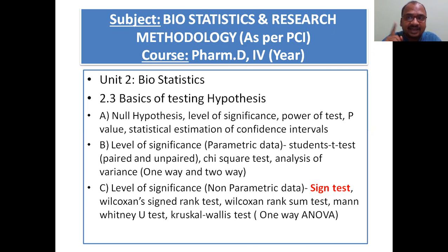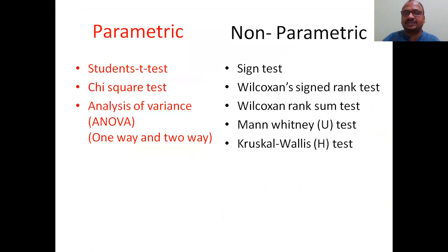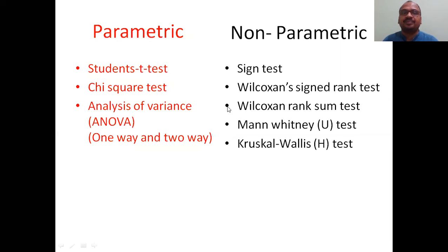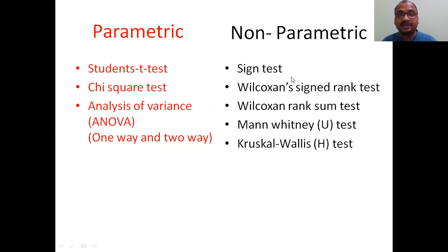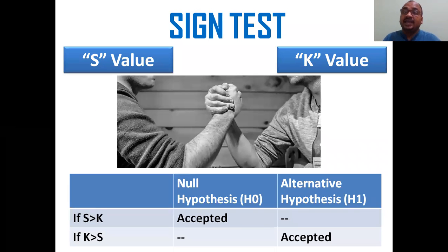The Sign Test is used to find the difference between the given observed values and the standard value. In the exam they might ask what is the difference between parametric and non-parametric tests and their different types. The Sign Test is the first and simplest form among the non-parametric tests.